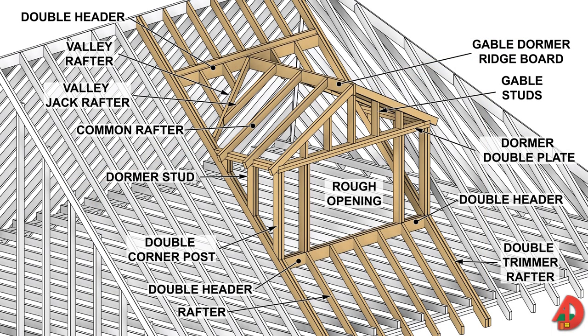Dormers add space and provide light and ventilation to a one and one-and-a-half story house or attic area. Dormers require a roof with a steep slope and a high ridge. Gambrel roofs are usually well suited for dormer construction. Most dormers are of gable or shed design. The gable dormer consists of a ridge board, common rafters, valley rafters, and valley jack rafters.